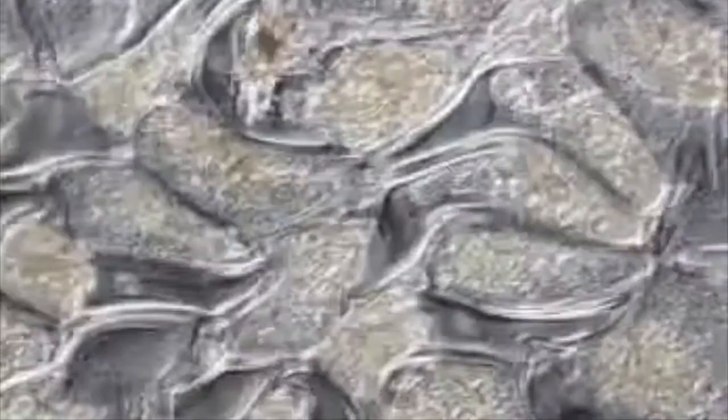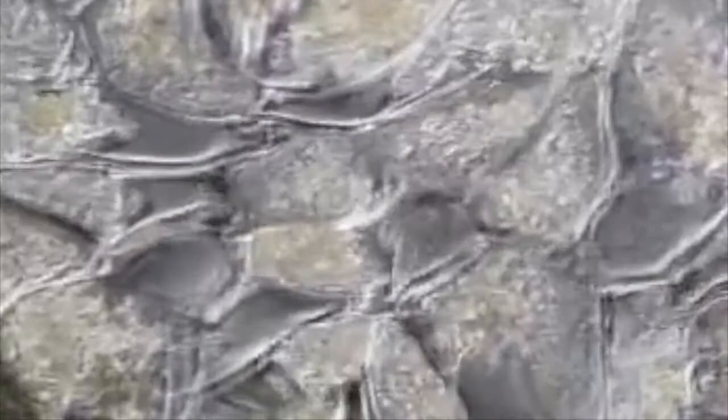A termite's gut is packed solid with flagellated protists that aid in breaking down wood. These large cells engulf wood chips chewed to size by their host. The termite could have done a better job on some chips, but trichonympha engulfs them without complaint. With the help of bacteria, the wood is digested and some of the products are shared with the termite. A variety of protists live in the termite gut, but not all of them digest wood. The relationships among the various species are still being worked out.